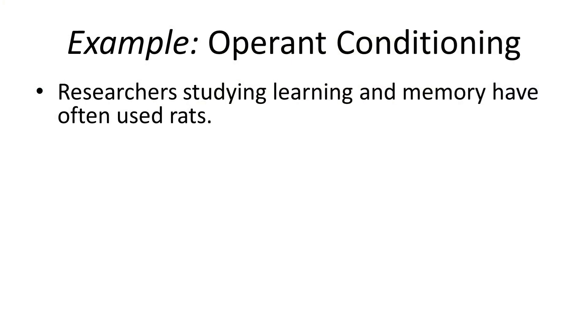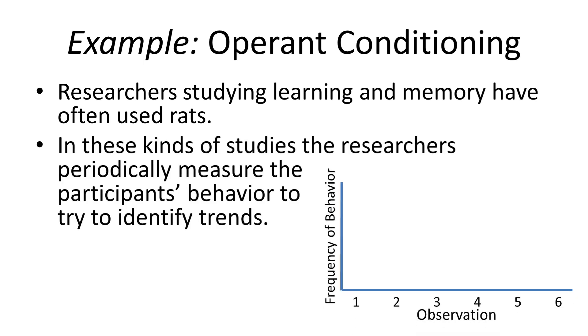Researchers from the beginning of psychology have been studying rats to make discoveries about learning and memory. In these kinds of studies, researchers will periodically measure their participant rat's behavior and try to identify trends. Looking at this chart on the right, this is an individual rat's frequency of behavior over six observations, and they might notice that the rat's behavior — the frequency of that behavior — is increasing over time. That's the basic idea behind a single subject design.